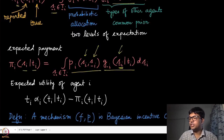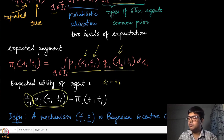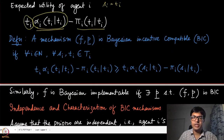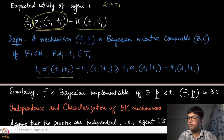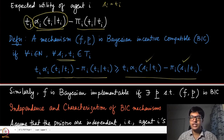The expected utility, when agent i reports truthfully (s_i = t_i), is t_i multiplied by the expected probability of allocation minus the expected payment — this is the interim utility agent i is getting. We are now in the right position to define Bayesian incentive compatibility: the inequality that when reporting truthfully, the expected utility is at least as much as when misreporting to some s_i, and this must hold for all s_i and t_i in T_i. There is no s_{-i} anymore, as it has already been integrated out.